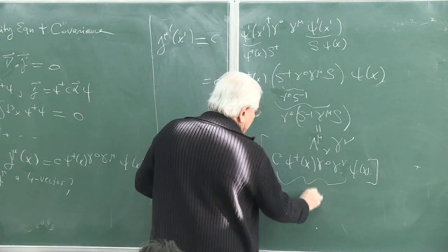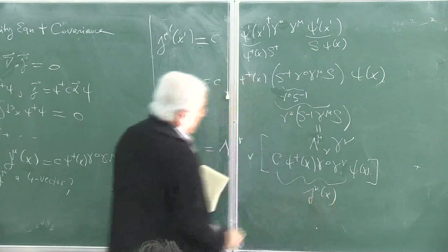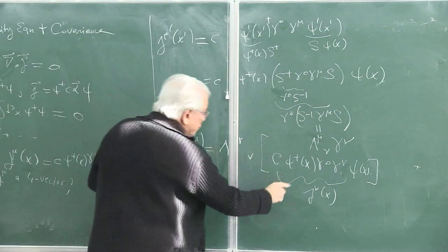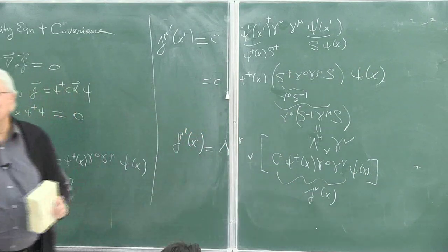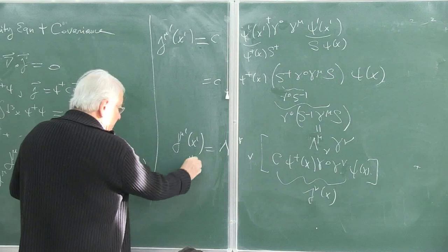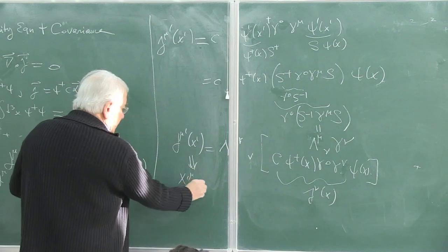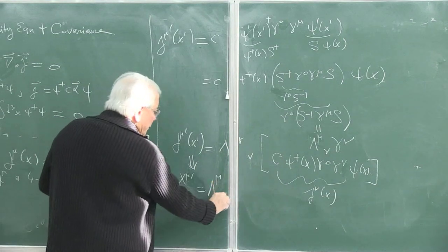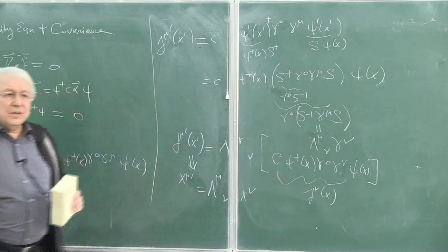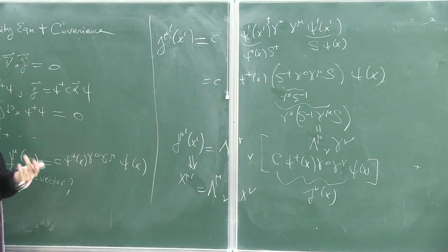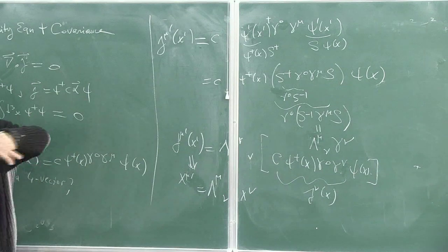Taking out lambda-mu-nu, we get c times psi-dagger of x, gamma-zero, gamma-nu, psi of x — which is the unprimed frame expression. So j-mu-prime of x-prime equals lambda-mu-nu j-nu. Exactly like the four-vector itself: x-mu-prime equals lambda-mu-nu x-nu. So this j-mu I defined is indeed a four-vector — it transforms like a four-vector under Lorentz transformations.